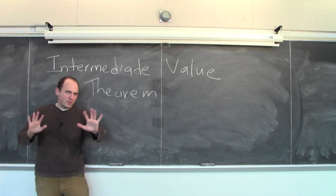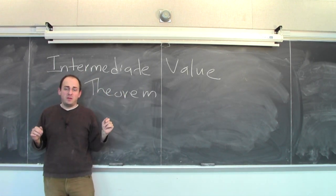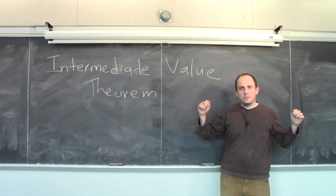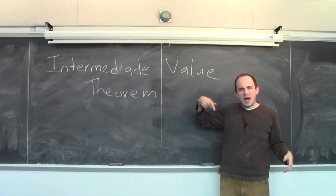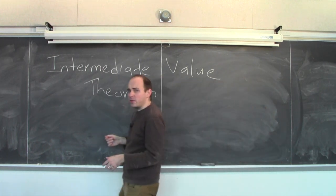Here's a real world example, or if you like, a real world non-example of the intermediate value theorem. Is it possible for me to be standing here in one moment, and over here in the next moment, without actually occupying the points in between? Well, what does the intermediate value theorem say?